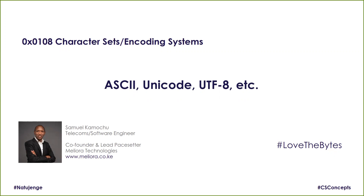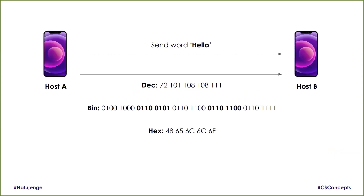We'll cover things like ASCII, Unicode, UTF-8, and many more. In the first episode of this series, I was able to demonstrate that computers communicate in numbers. So every character that we need to send on the network needs to be converted into a number, or encoded into a number.